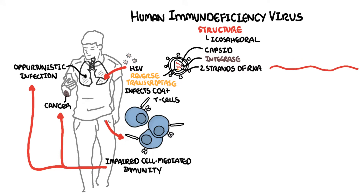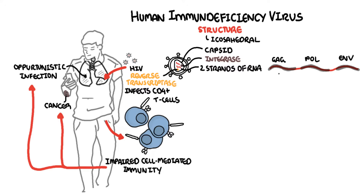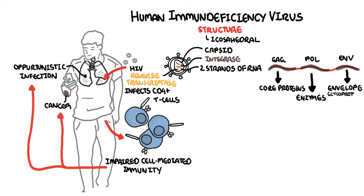HIV's RNA is made up of nine genes, which contain all the instructions to make new viruses. Three of these genes — GAG, POL, and ENV — provide the instructions to make proteins that will form the new virus particles, consisting of the core proteins, the enzymes, and the envelope glycoprotein.